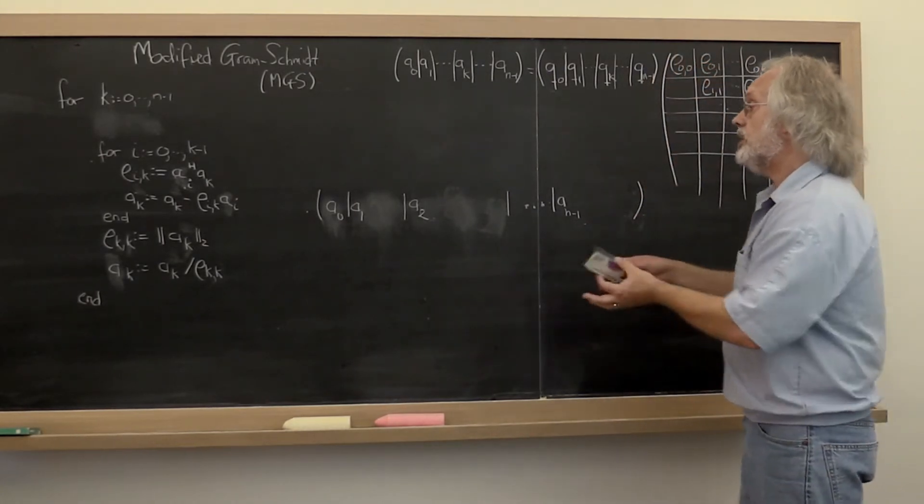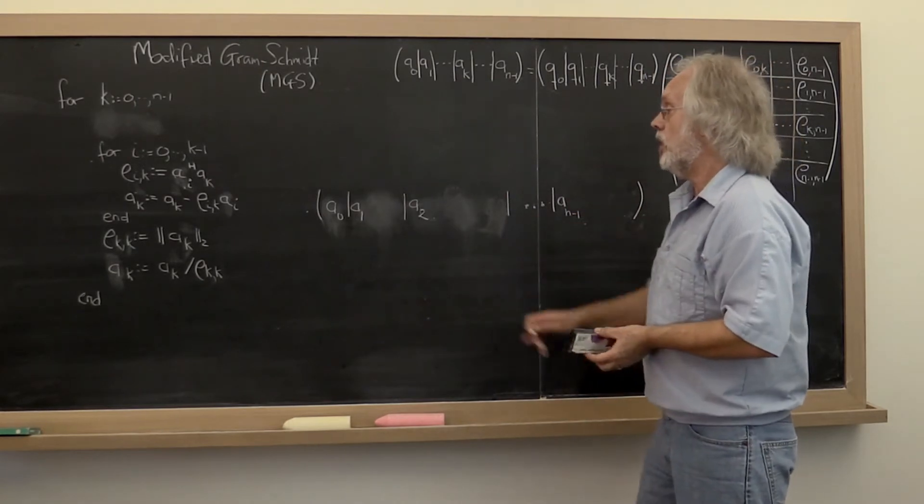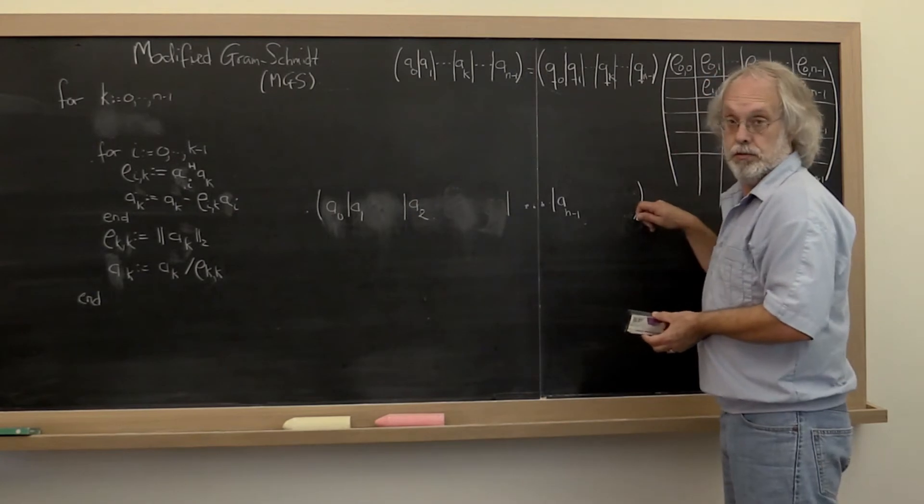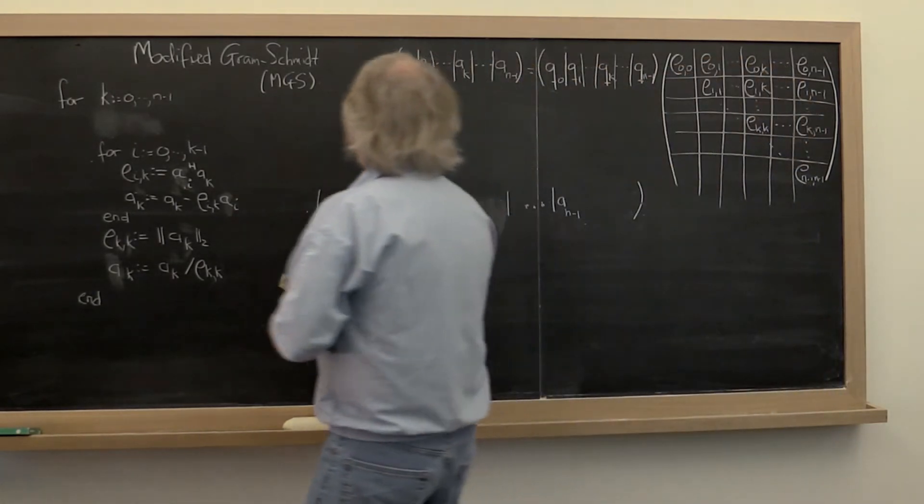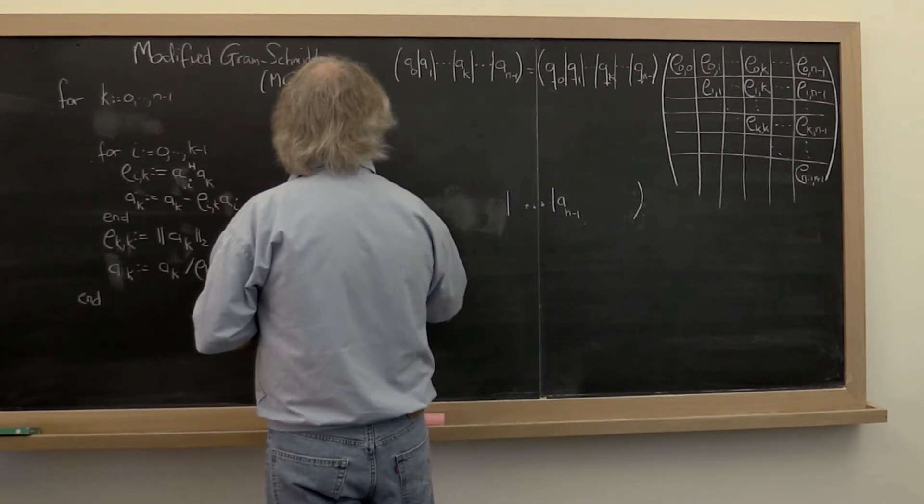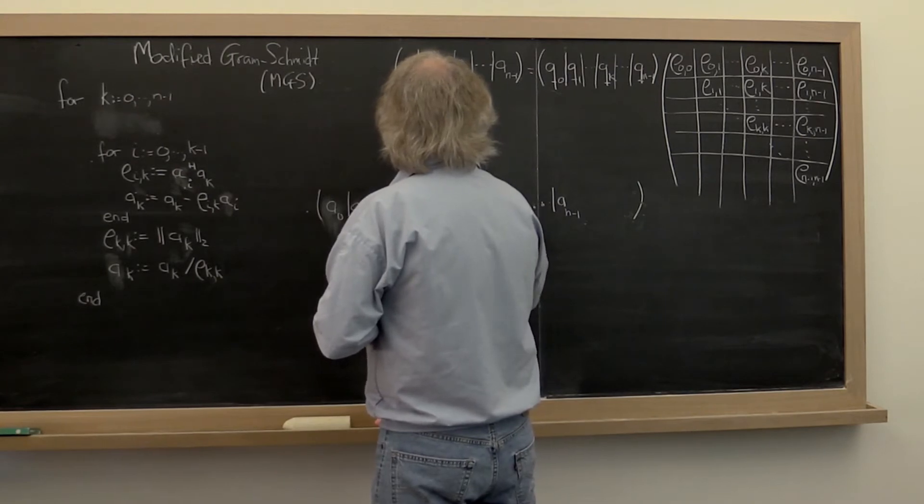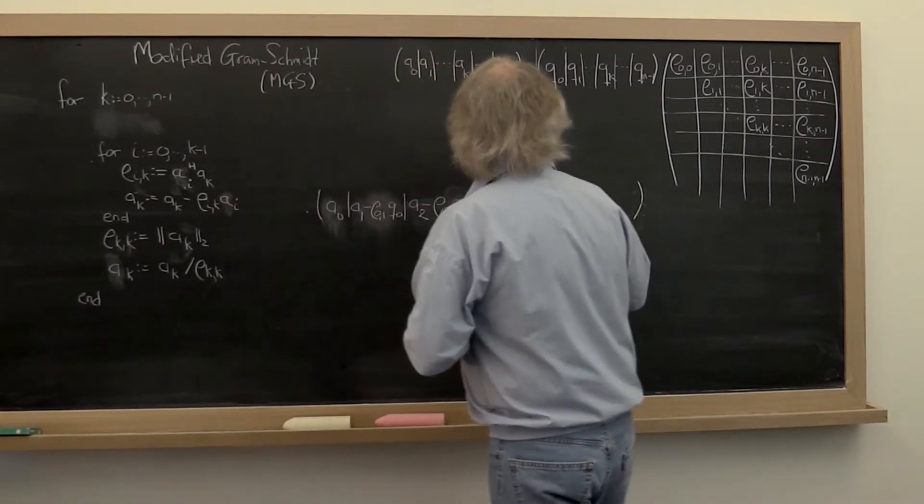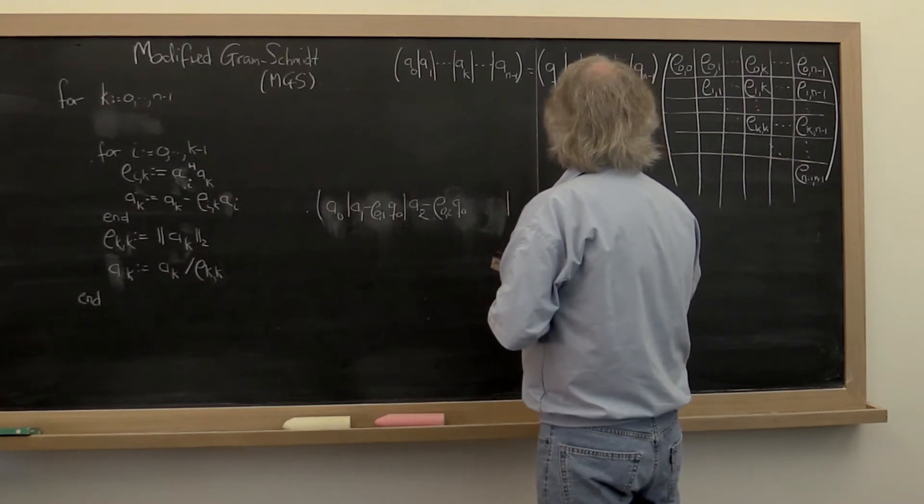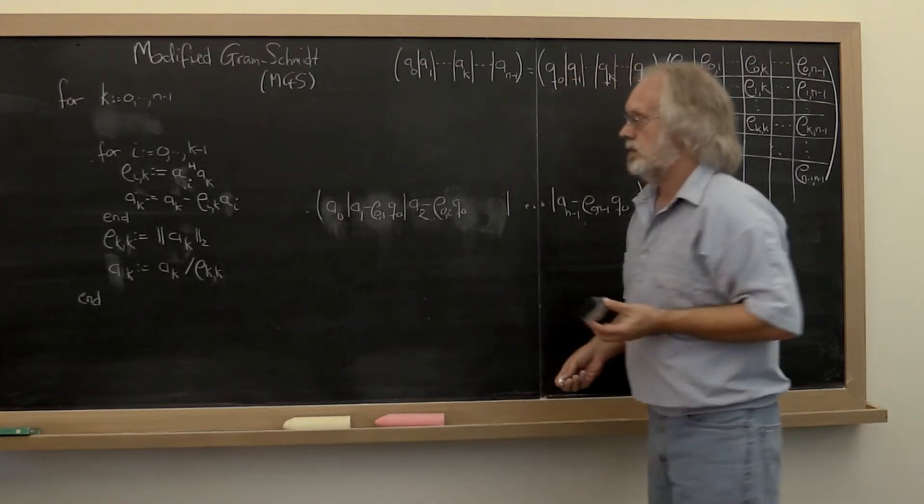And that also means that we could then go and subtract the component in the direction of Q, not just off of the next column, but off all of the columns. And then this becomes minus row zero one times Q, minus row zero two times Q and so forth, and minus row zero n minus one times Q.